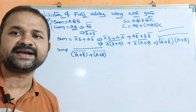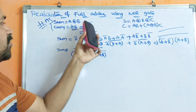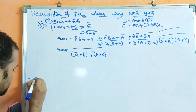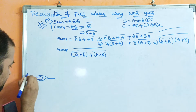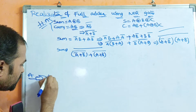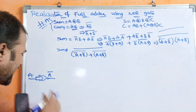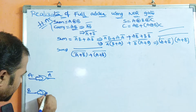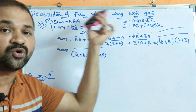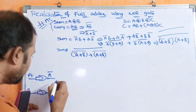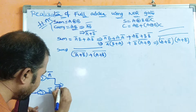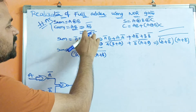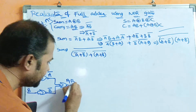Now let us write the diagram for the carry. Carry means (Ā + B̄)̄, which is nothing but AB. So here we require Ā as well as B̄. For that purpose, we use a single-input NOR gate — it acts simply as an inverter. With A as input, it produces Ā. Similarly with B as input, it produces B̄. Then passing Ā and B̄ as inputs to the next NOR gate produces (Ā + B̄)̄, which is nothing but AB — the carry in the half-adder.